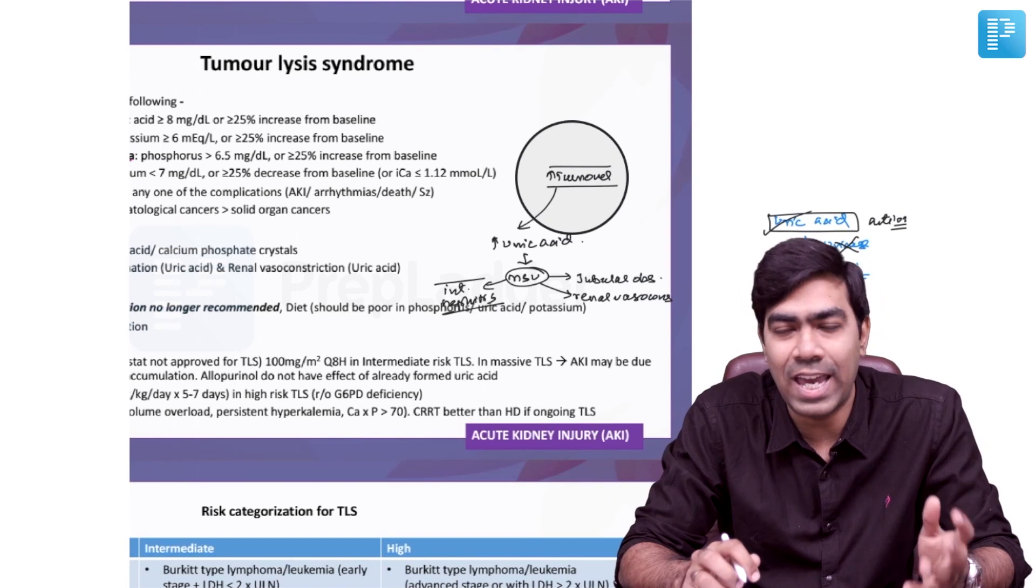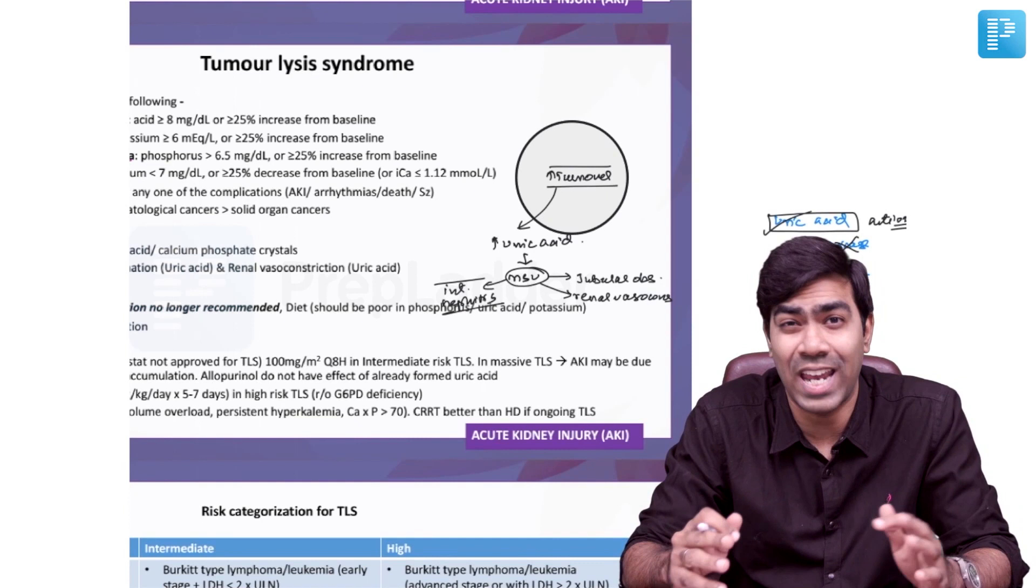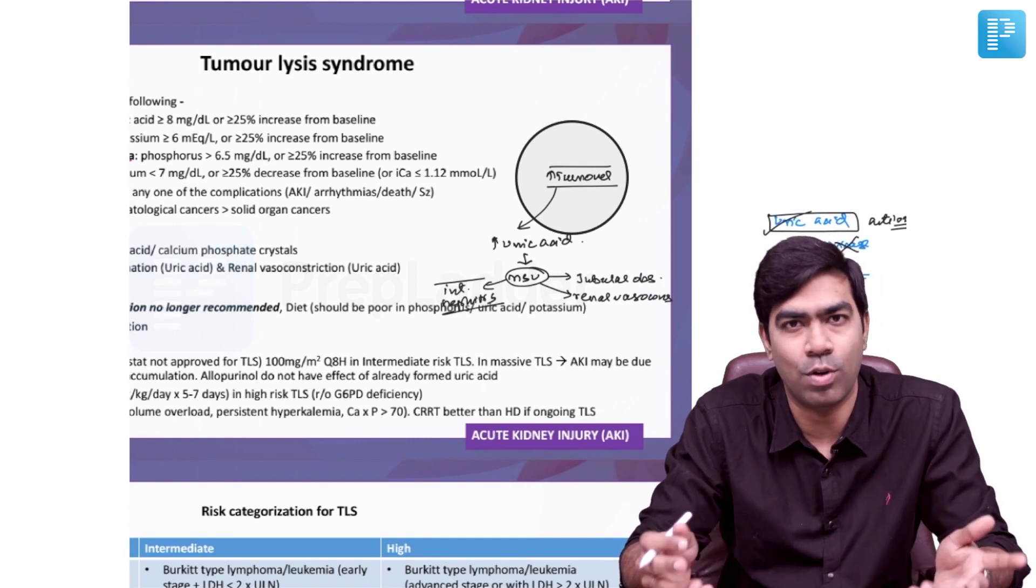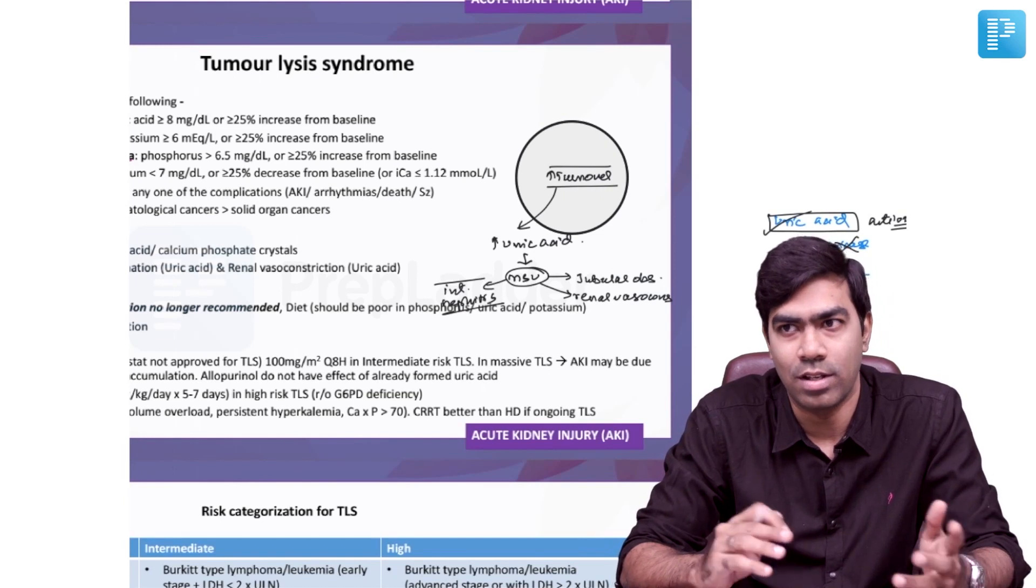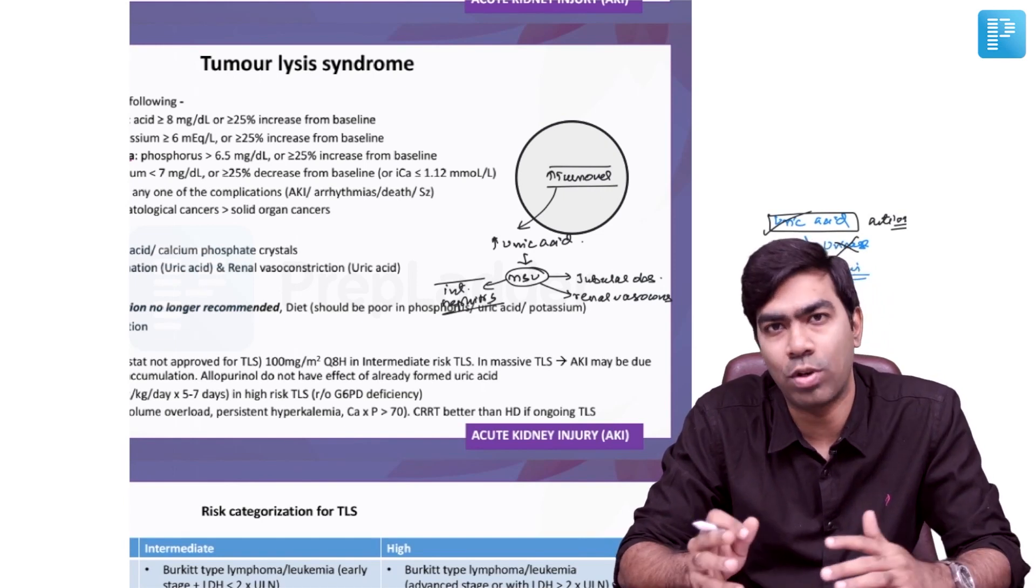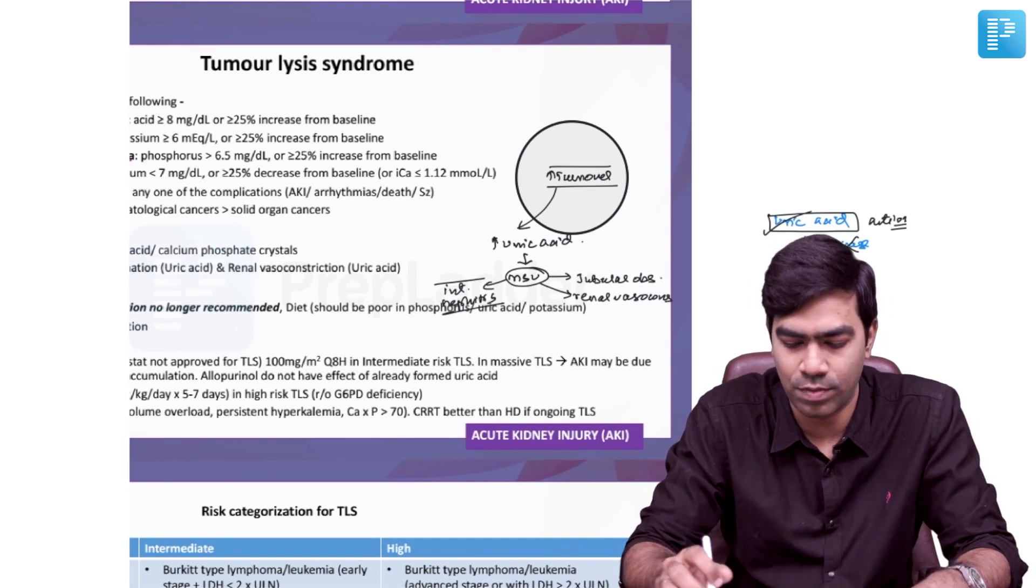To produce AKI, just a value of more than 6.7 will not be enough. At least a value of more than 8 is needed to produce acute kidney injury. That is why the definition of tumor lysis says that uric acid should be more than 8 milligrams per deciliter.